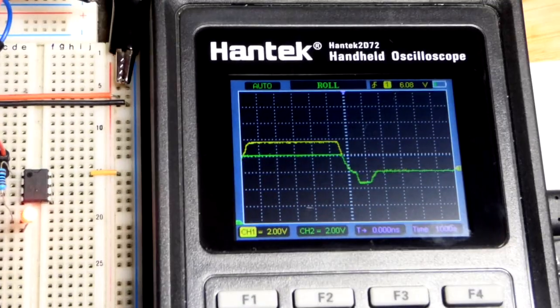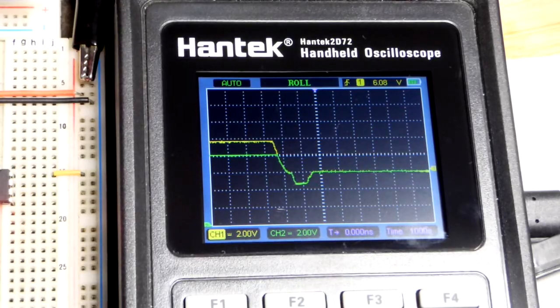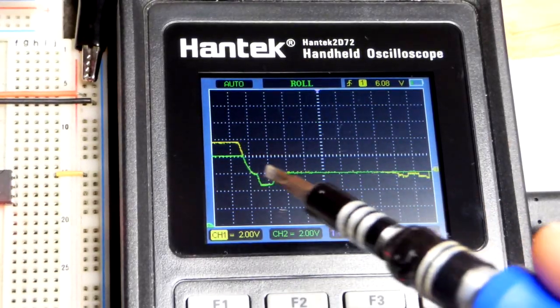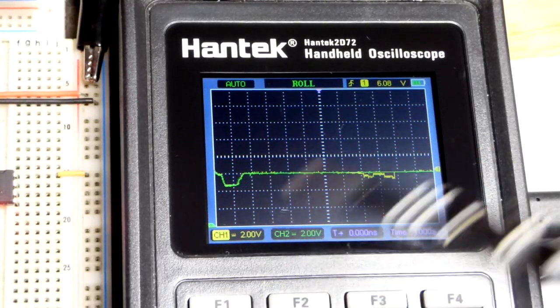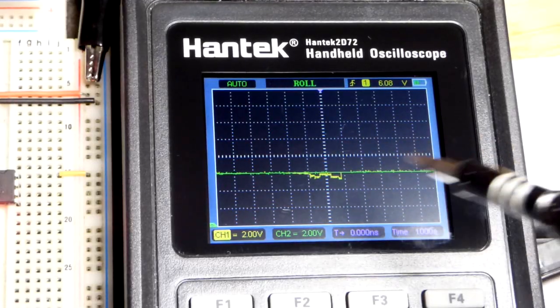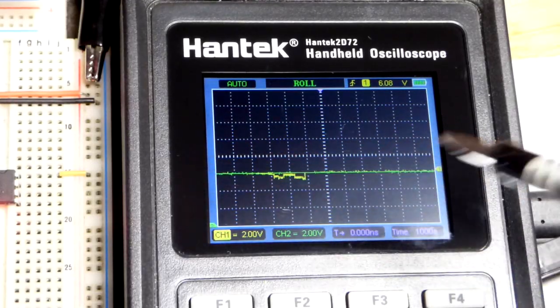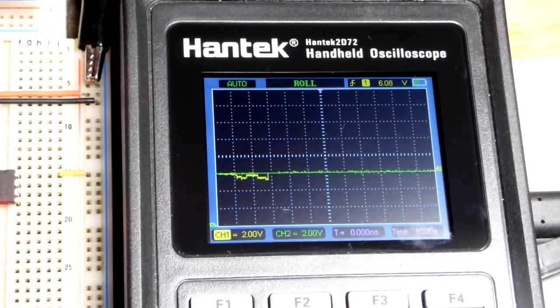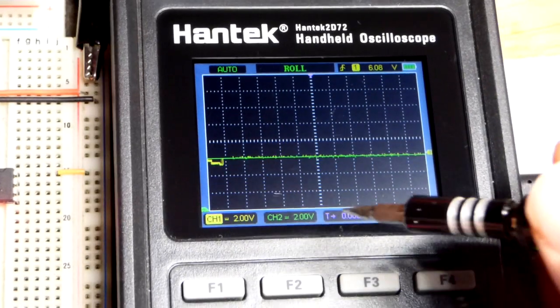This is roll mode right there. I can't remember what the other mode is, but if you're not just kind of looking at the real-time data scrolling along, then usually it's because things are going too fast. Then it kind of takes more of a picture. You'll see a waveform that just holds steady. And it keeps getting updated.